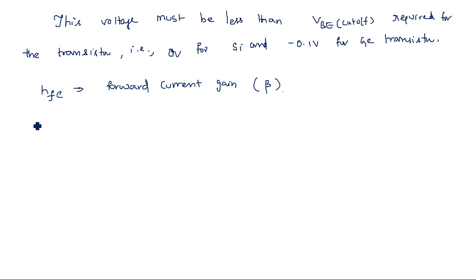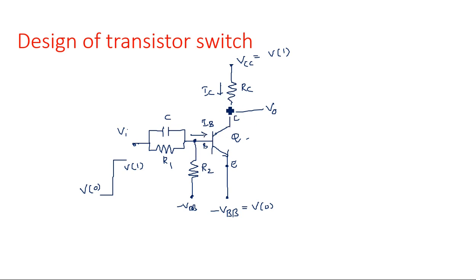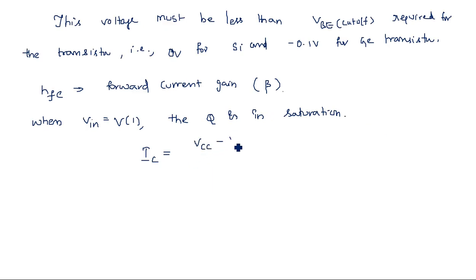Now let us consider when input equals V1. In this case, transistor Q is in saturation — it is in the on state. A short circuit exists, so a large collector current IC flows. IC is the current flowing from VCC through RC to VCE(sat), so IC equals (VCC − VCE(sat)) / RC.